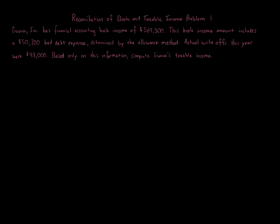Reconciliation of Book and Taxable Income Problem 1. Guava Inc. has financial accounting book income of $569,300. This book income amount includes a $50,700 bad debt expense determined by the allowance method. Actual write-offs this year were $48,000. Based only on this information, compute Guava's taxable income.